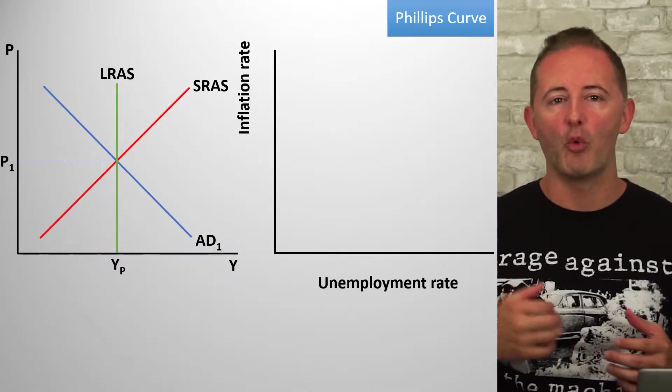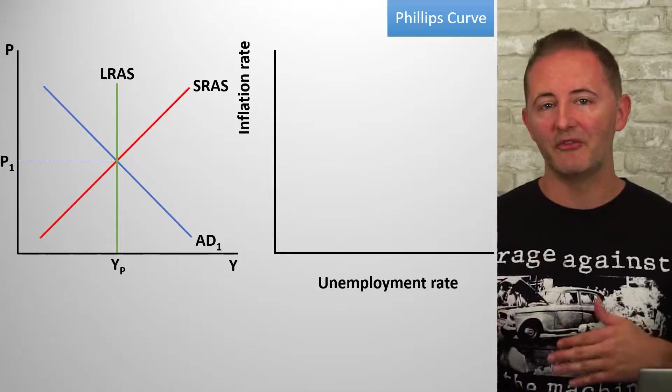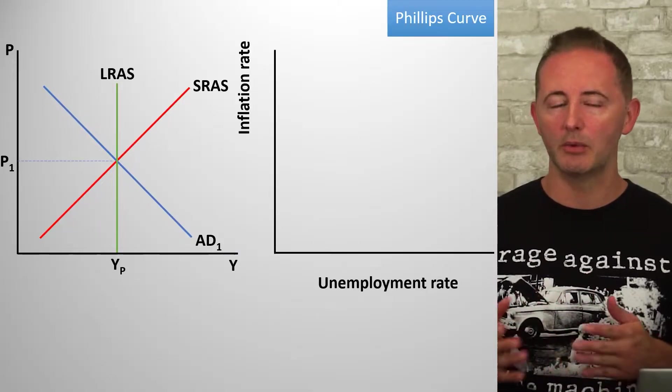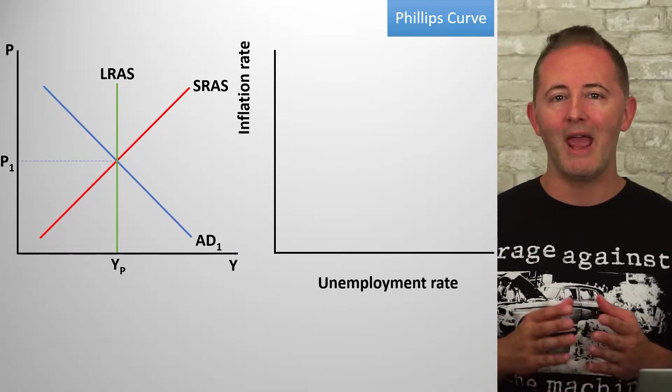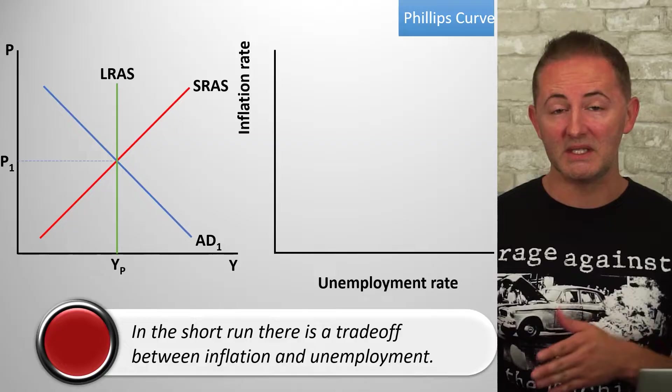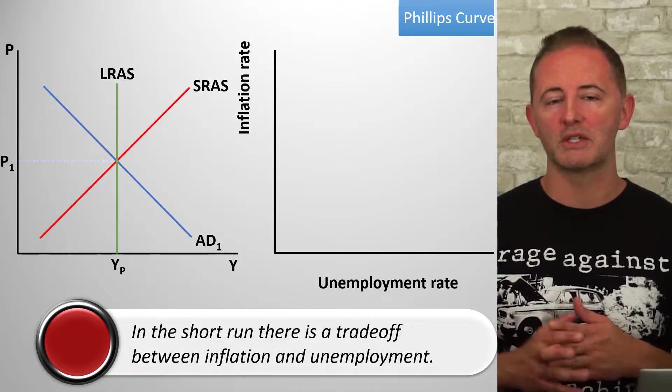Next up is the Phillips curve — and good news, it's the only new model in this unit, and it's basically just a rebranding of the AD-AS model. On the Phillips curve, the y-axis is the inflation rate and the x-axis is the unemployment rate. The short-run Phillips curve, or SRPC, is downward sloping.